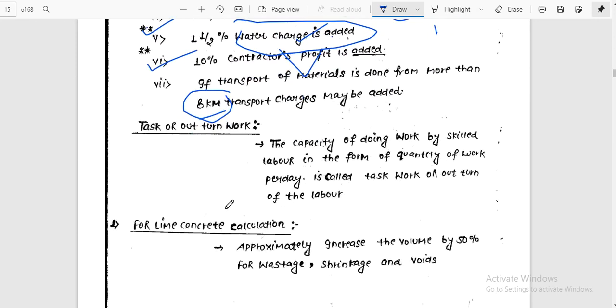Out turn of the work: the capacity of doing work by skilled labor in the form of quantity of work per day is called outturn of the work or outturn of the labor.